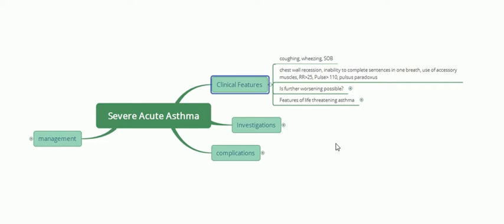Pulse greater than 110 and presence of pulsus paradoxus are also key features. Pulsus paradoxus is a special phenomenon — it is measured using a sphygmomanometer. On inspiration, there is a fall in systolic blood pressure of greater than 10 mmHg. Normally a pulse reduces by 2 to 4 mmHg on inspiration, but in severe acute asthma or status asthmaticus, the decrease is greater than 10 mmHg systolic.